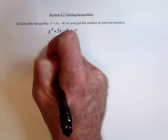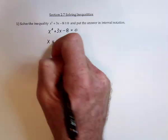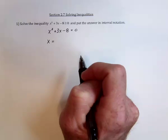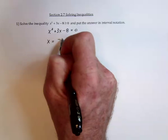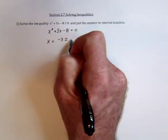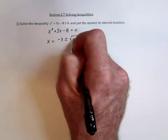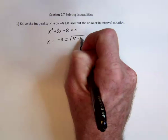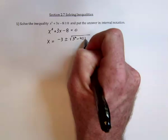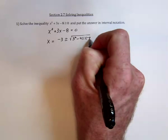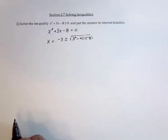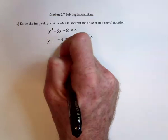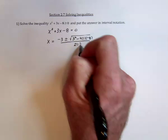I believe that I'll try the quadratic formula. It never fails. X is equal to negative b plus or minus the square root of b squared minus 4 times the a times c. It's all divided by 2 times the a.